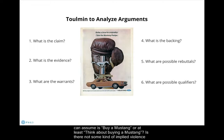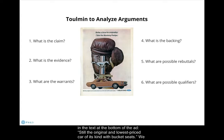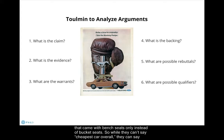Is there not some kind of implied violence in the use of the boxing glove image? Do you think this warrant is intentional? Also notice the subtle qualifier in the text at the bottom of the ad, which reads: 'still the original and lowest priced car of its kind with bucket seats.' We can probably assume this is a necessary qualifier because there were probably cheaper cars of the Mustang's kind that came with bench seats only. So while they can't say cheapest car overall, they can say cheapest car of its kind with bucket seats.